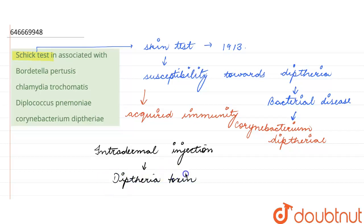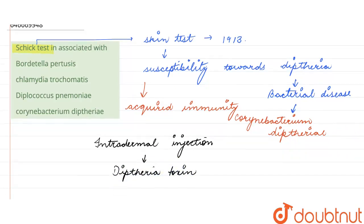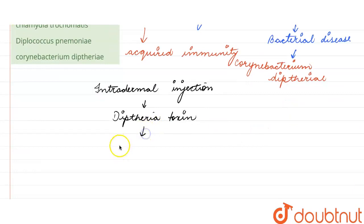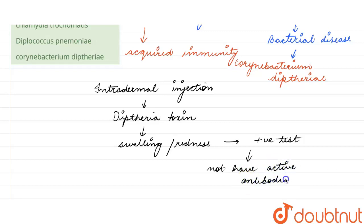is injected into the patient. If that patient develops swelling or redness in that particular area, that is seen as a positive test, meaning that the patient does not have any active antibodies against the disease.